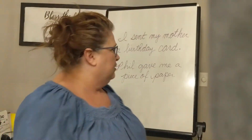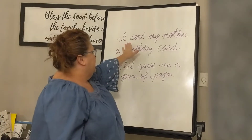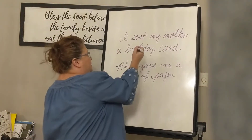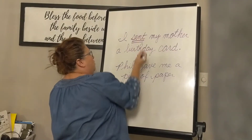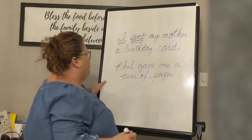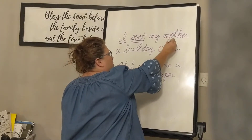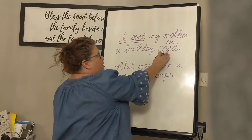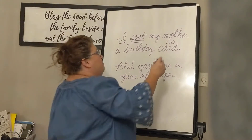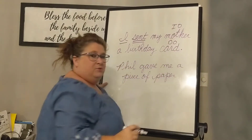The answer to that question will be our indirect object. It's pretty simple. I want you to look up here at the board. I have a sentence already written: I sent my mother a birthday card. Sent is our verb. Who or what sent? I. I sent whom or what? Card. I sent card — to whom or for whom? Mother would be our indirect object.